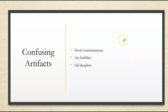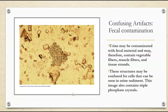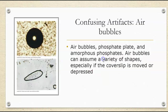Other confusing things we can see in the urine are artifacts like fecal contamination, air bubbles, oil droplets, hairs, fibers, and things like that. Fecal contamination can include vegetable fibers, muscle fibers, and tissue strands — these can be confused for cells or other things like triple phosphate crystals. As you can see here, if part of this image was covered up you might think it was potentially something else. And obviously this is digested plant fiber.